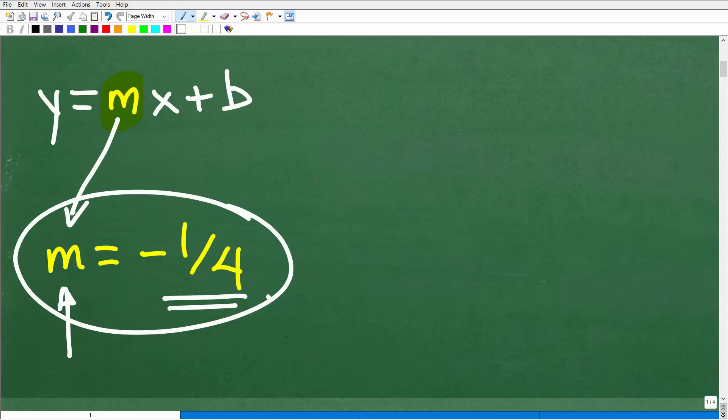But in this particular situation, the correct answer is negative one-fourth. Now, if you didn't get this, well, I'm quite happy that you got this wrong because it gives me a chance to teach you this so you can understand slope as this is a critical topic in algebra.